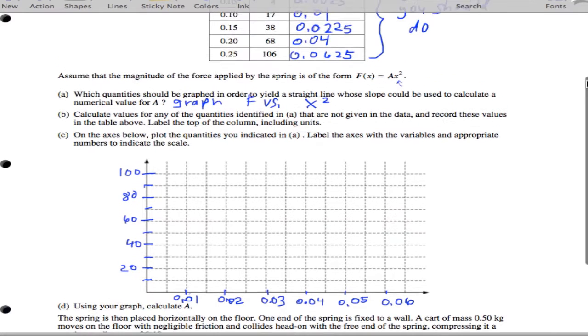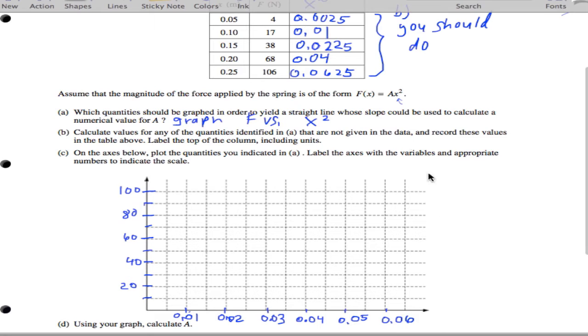And then you're going to go ahead and plot your points. So, the first thing is 0.0625 at 106, you want to put that about, I'd say here. And 0.04 is at 68. Just kind of go in here. 60, 70, something there.